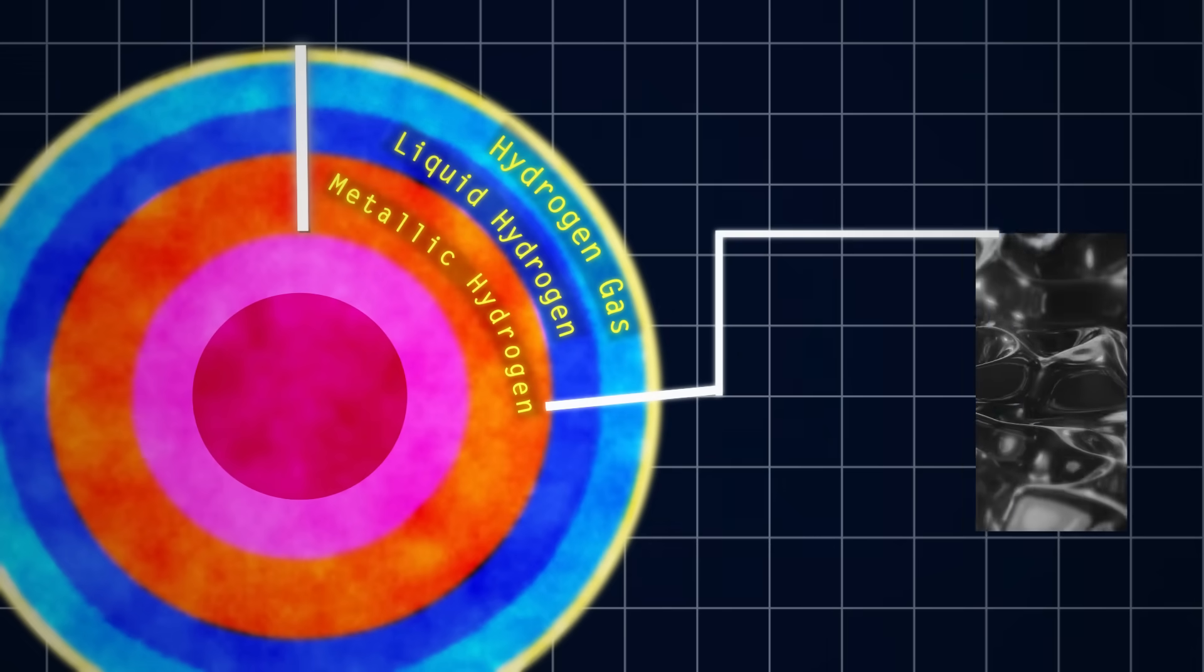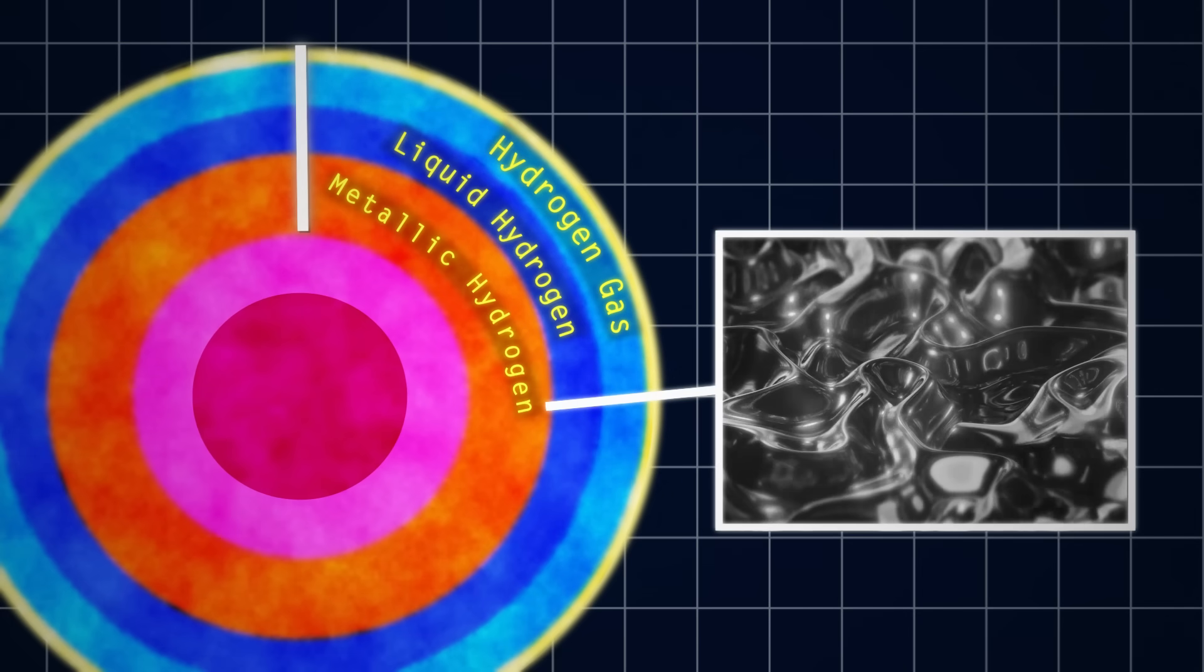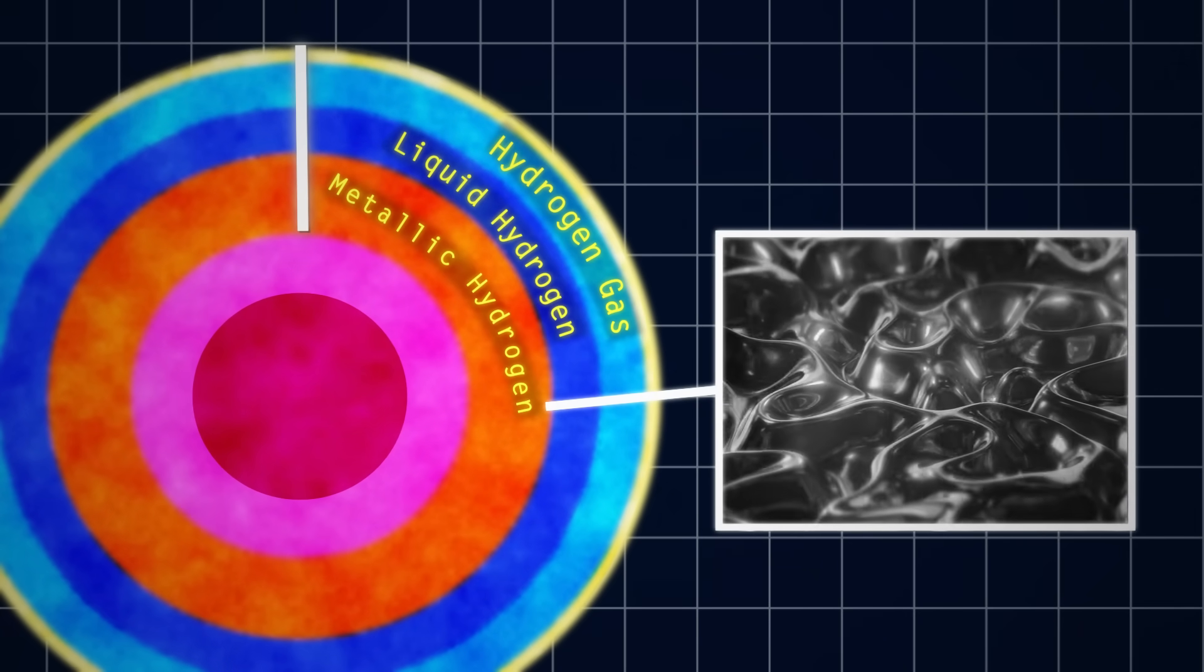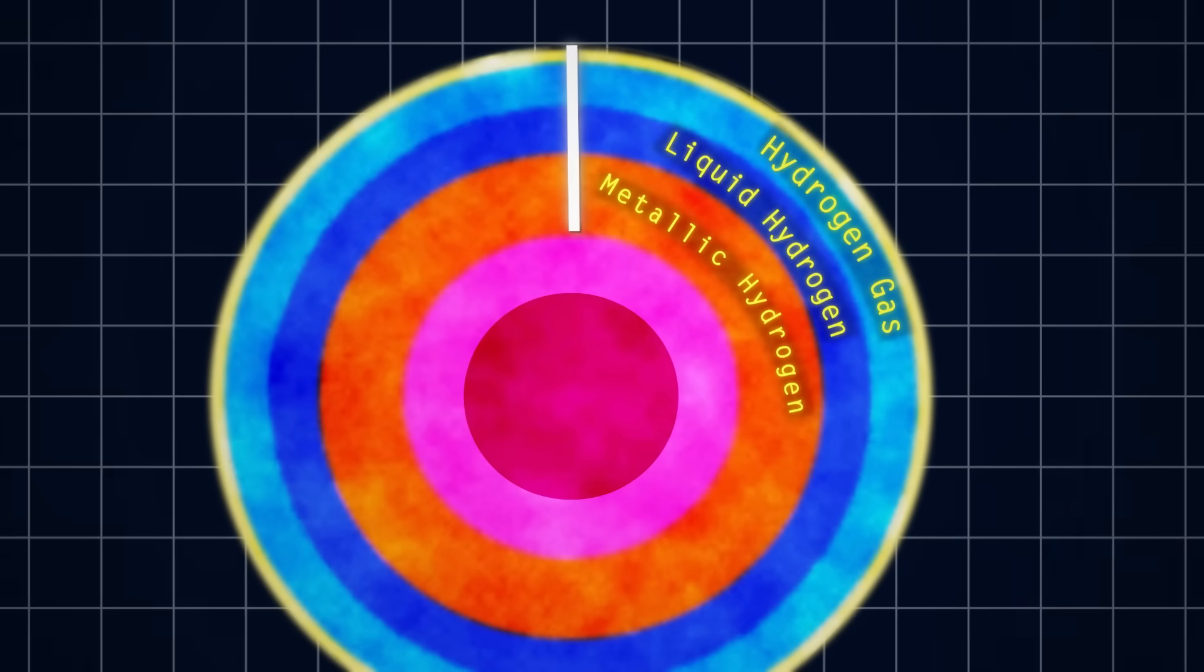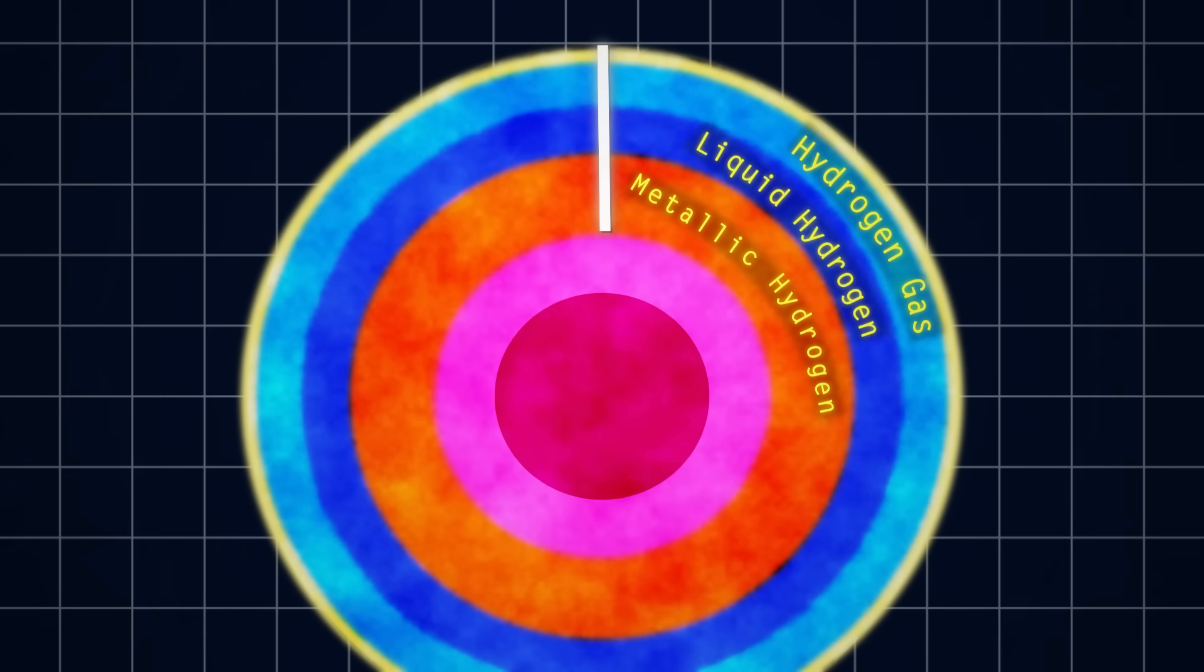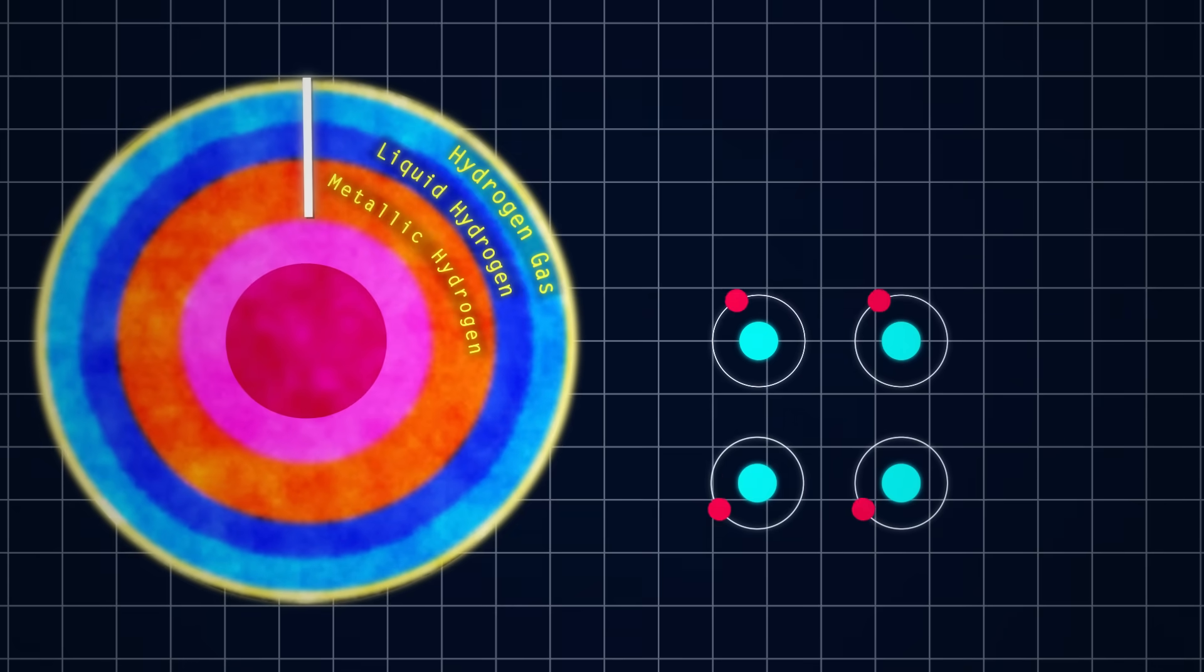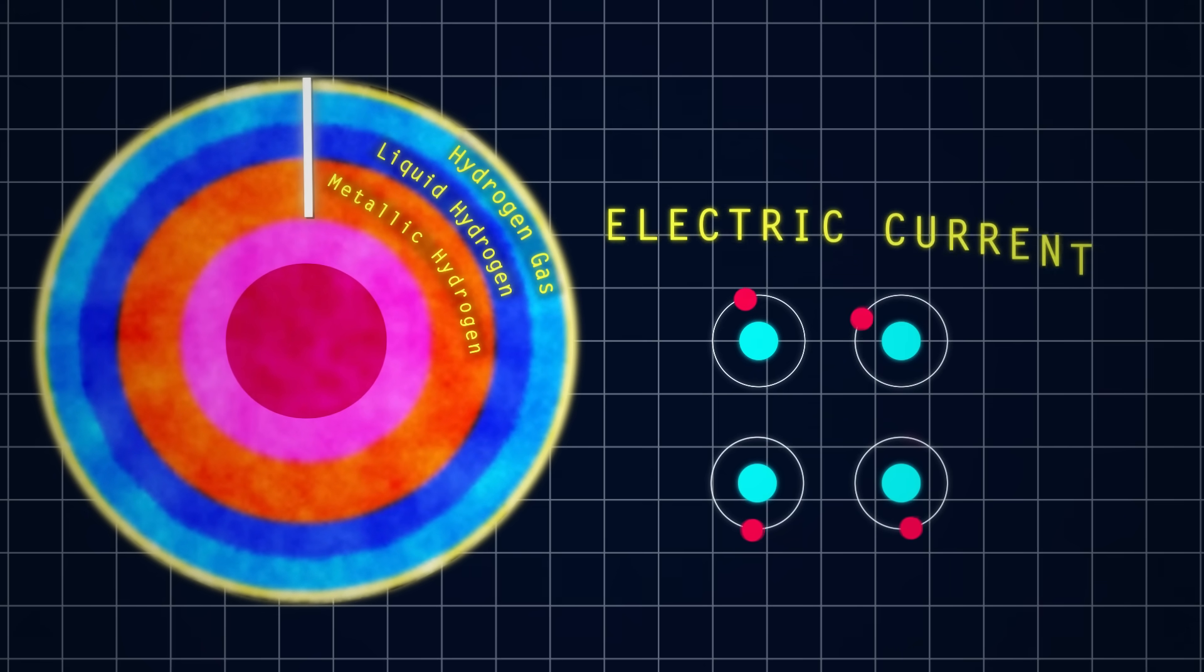Now, that doesn't mean it turns solid like steel, it's still liquid, but a metallic liquid, maybe something like the mercury inside a thermometer. The biggest change that takes place here is that metallic hydrogen now has the ability to conduct electricity. Jupiter's gravity squeezes so tightly down here that electrons break free from the hydrogen atoms and flow freely throughout the liquid, generating an electric current.